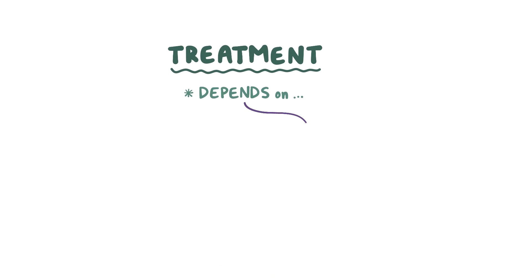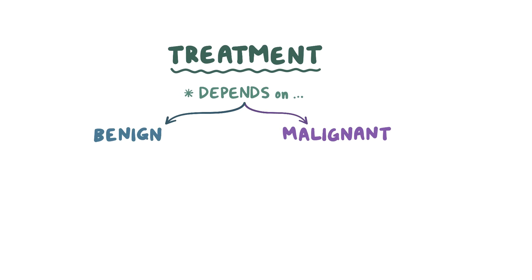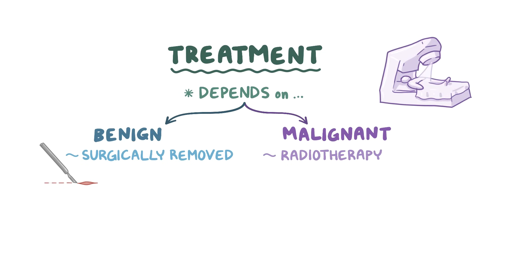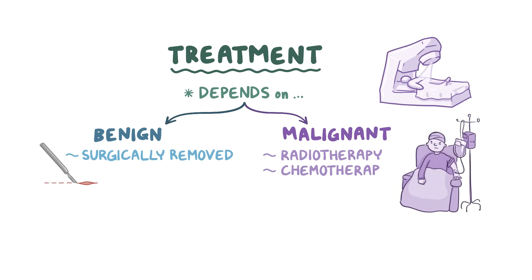The treatment of bone tumors depends on whether they are malignant or benign. Benign tumors can be surgically removed to reduce pain and the risk of fractures, while malignant tumors are treated with radiotherapy, chemotherapy, and surgery, depending on the type and spread of the tumor.